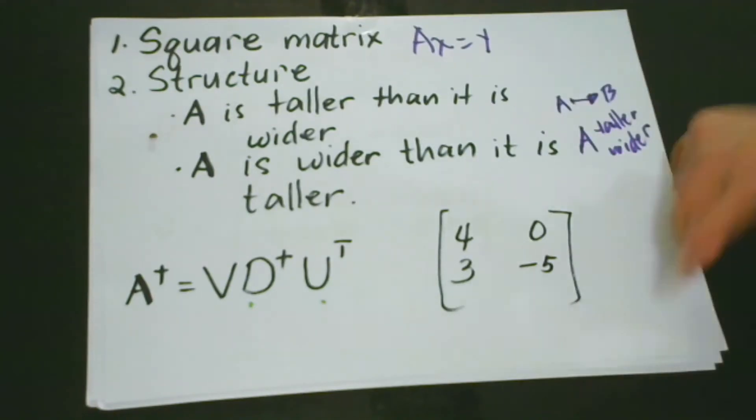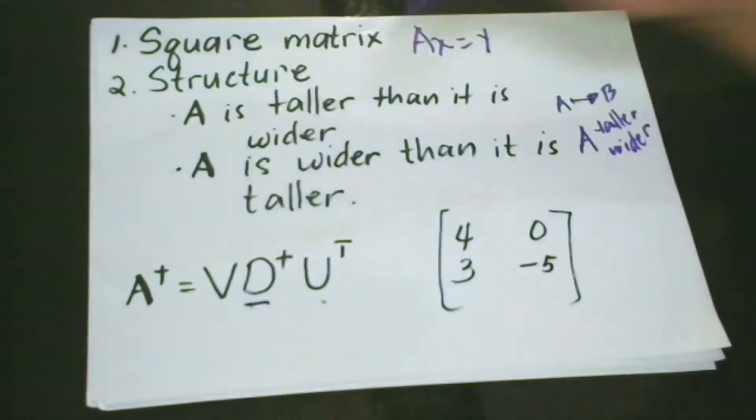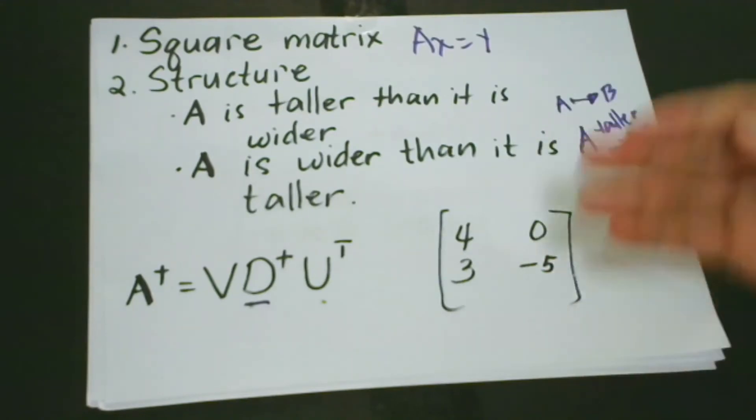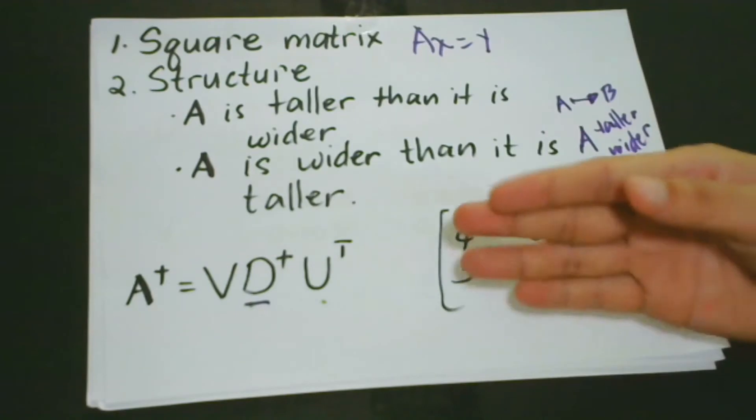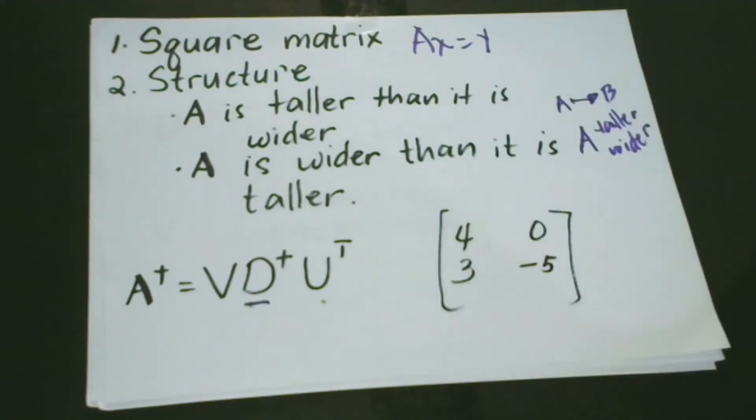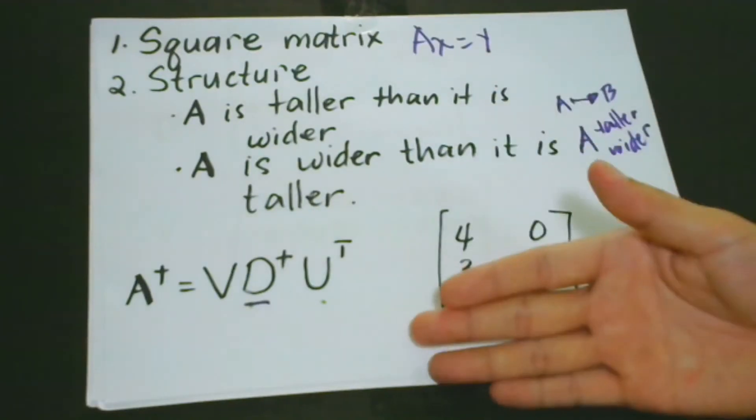So then D inverse is the pseudo-inverse of a diagonal matrix D, which is computed by taking the reciprocal of the non-zero elements and then getting the transpose of the resulting matrix. So for us to understand the equation, we are going to have this example and we will have the process step by step.